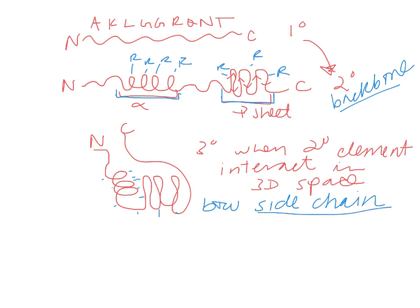Tertiary structure is when these secondary structure elements come together in three-dimensional space. It's the side chains that are interacting here because the backbones are already tied up. So tertiary structure is when the secondary structure elements interact in three-dimensional space, and there's still side chains sticking out here having interactions with water.